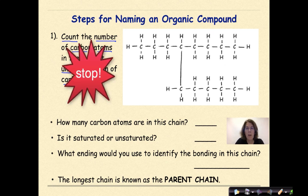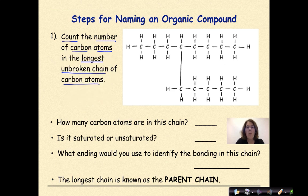Steps for naming an organic compound. The first thing that you need to do is count the number of carbon atoms in the longest unbroken chain of carbon atoms. So I want you to stop for a moment, look at this molecule, and see if you can figure out how many carbons are in the longest continuous chain.